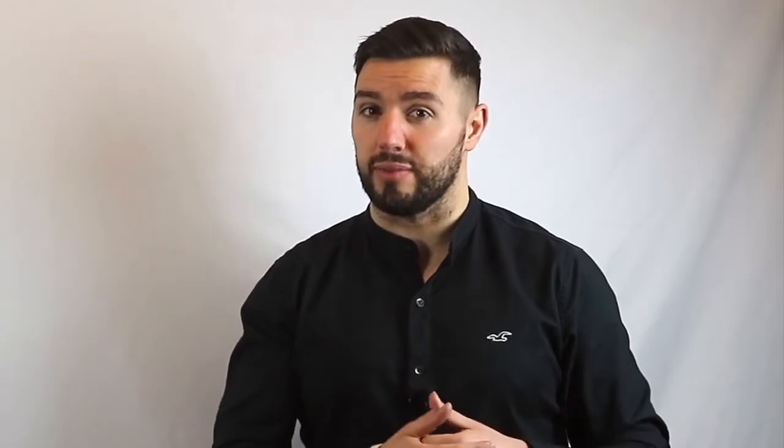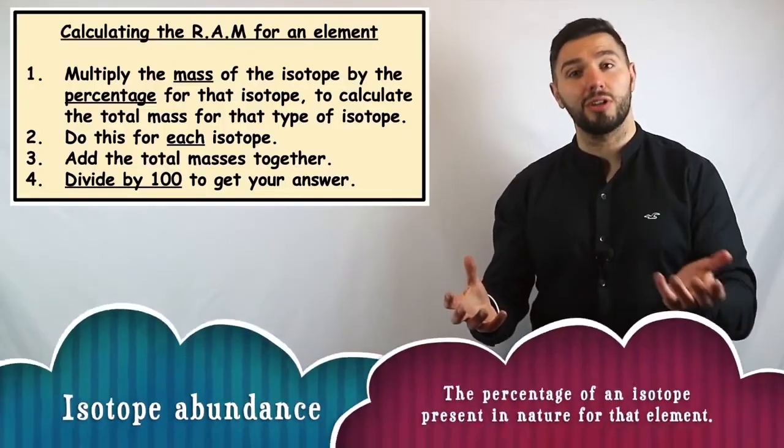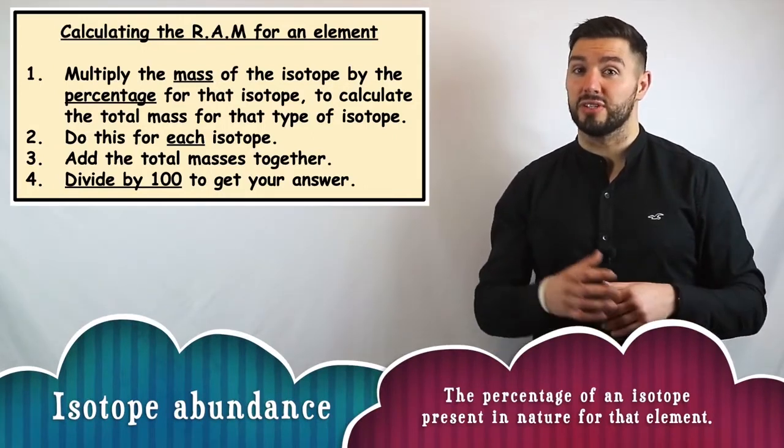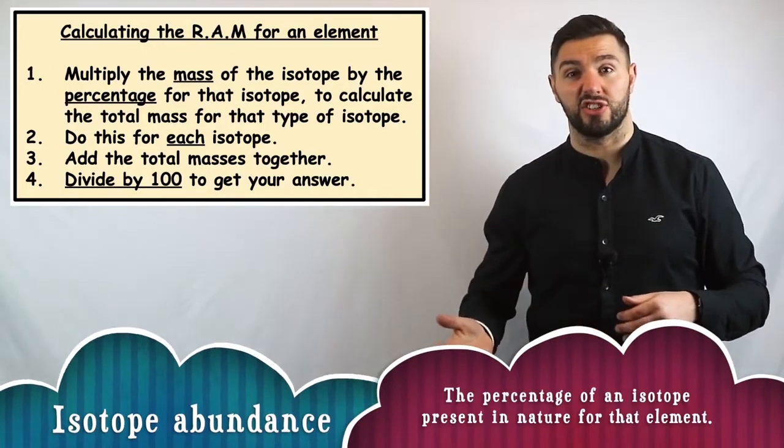Now, if we did the same with elements, that helps us get the relative atomic mass for each of those elements. All we have to do is take the mass of the isotope and multiply it by the percentage of its abundance. The abundance of an isotope just tells you how much of it exists in nature.